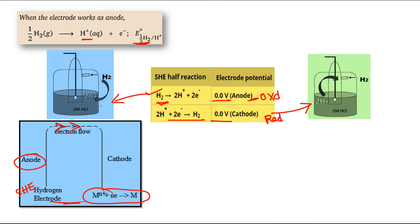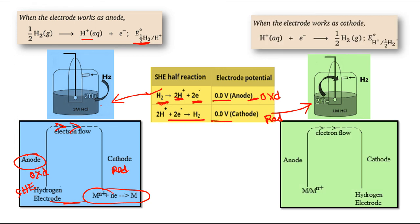The other system can be any system, generally represented as Mⁿ⁺ accepting n electrons. These electrons come from hydrogen — hydrogen releases electrons and is converted to H⁺, while Mⁿ⁺ accepts those electrons and is reduced to M. Reduction occurs at one side, oxidation at the other. The other possibility is SHE acting as cathode on the right-hand side: H⁺ accepts electrons and is reduced to H₂, while M is oxidized to Mⁿ⁺, releasing n electrons that flow towards the cathode.